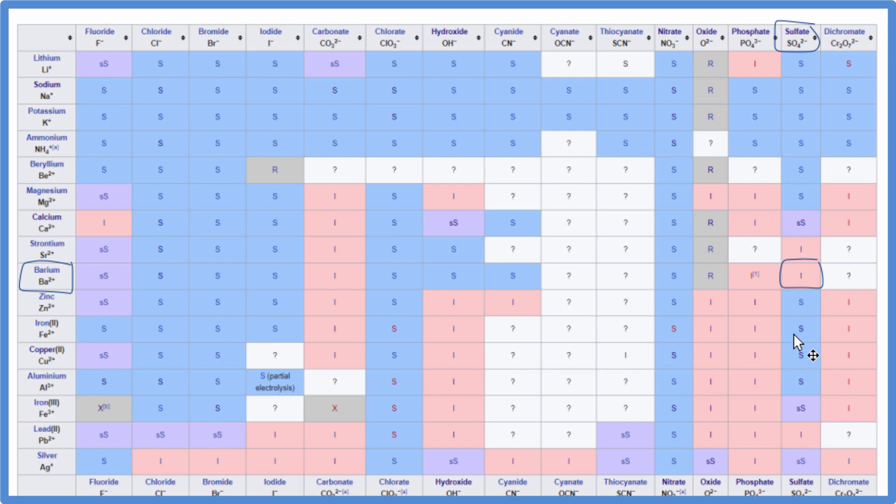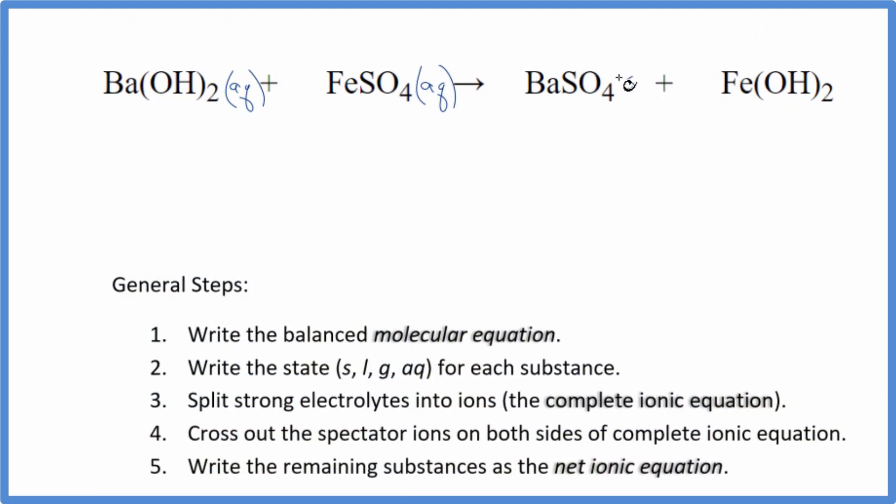And because of that, they won't dissolve. So we're going to write an S for solid. When these two substances react, this is going to be a solid. It's going to fall to the bottom of the test tube. This is a precipitation reaction.